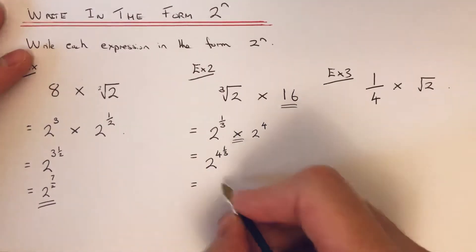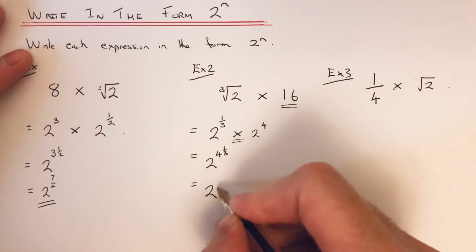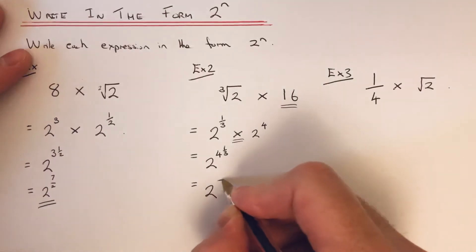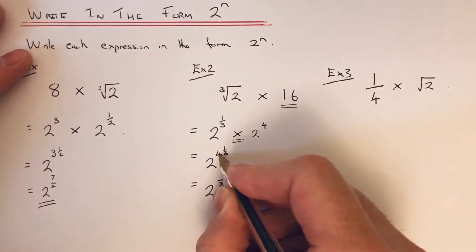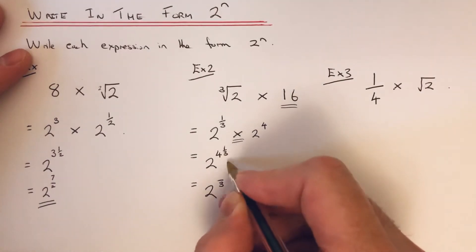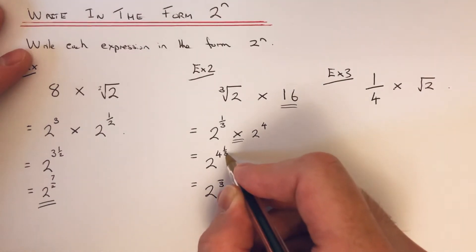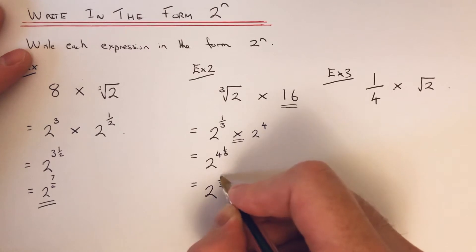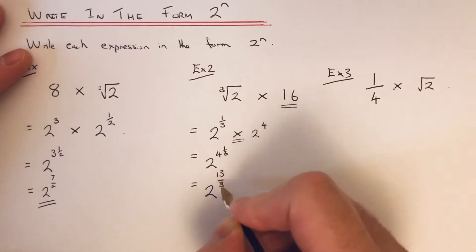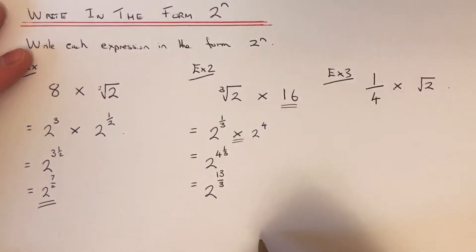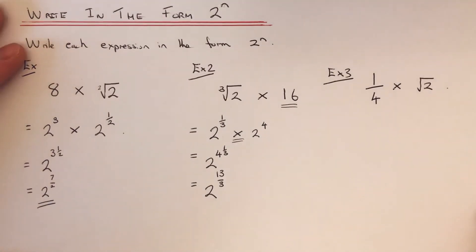And if you prefer an improper fraction, you can convert 4 and a third to 2 to the power of 13 thirds. So that's your final answer.